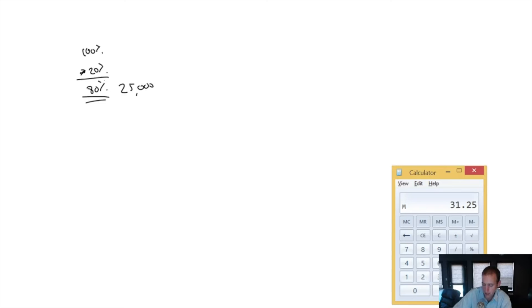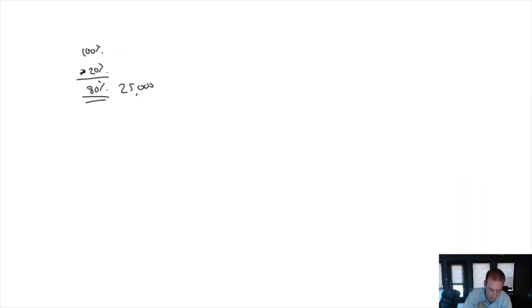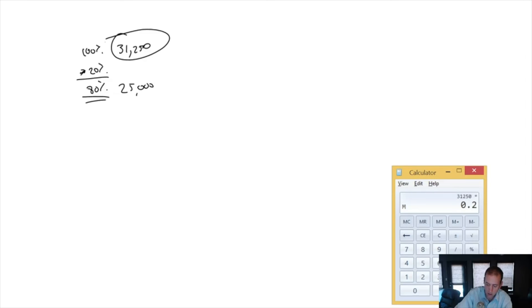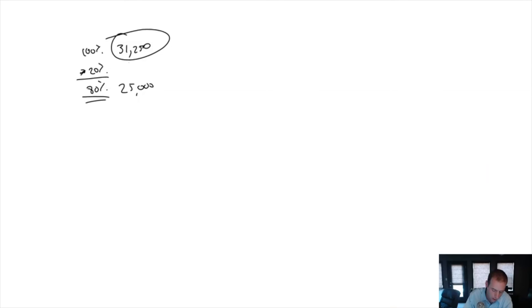$25,000 divided by 0.8, you're going to find that it's $31,250. So $31,250 is our pre-tax net income. That's the number we're going to shoot for in our target profit calculation, knowing that we're going to take 20% off at the end.